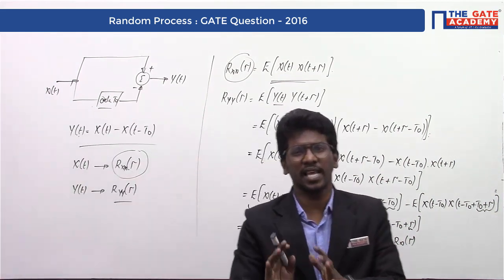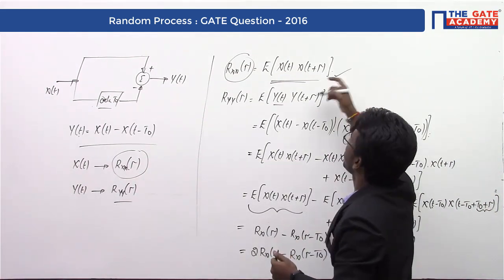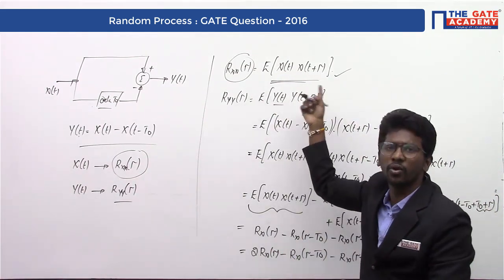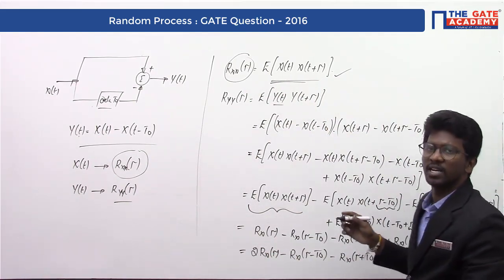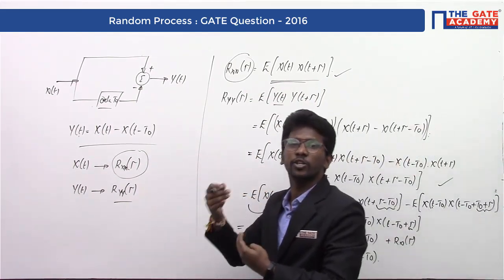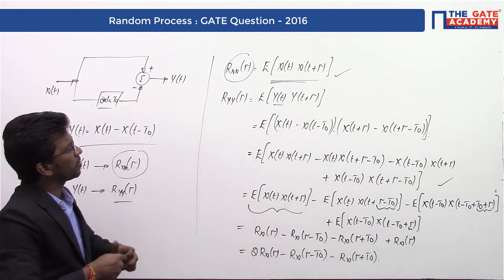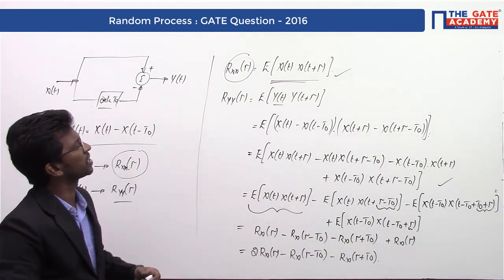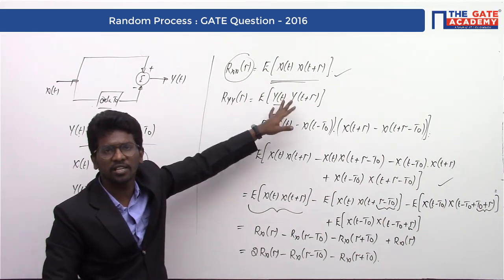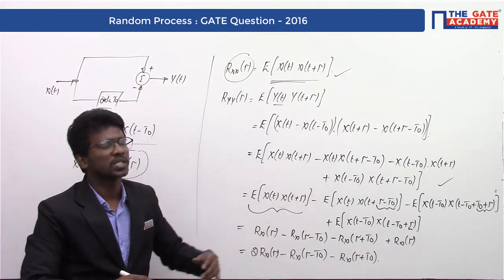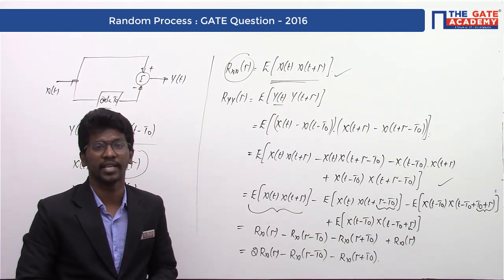This matches option B: 2Rx(τ) - Rx(τ - T₀) - Rx(τ + T₀). The concept is straightforward — you only need to know the autocorrelation function formula and the basic idea of adjusting and converting terms to the given options. This is an easy problem based on just the autocorrelation function.